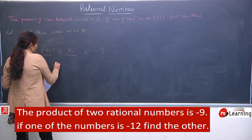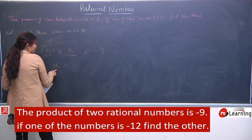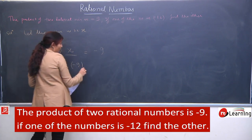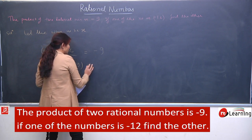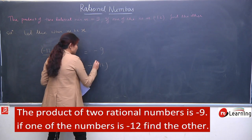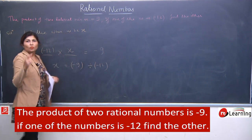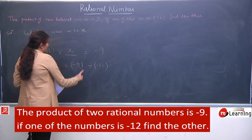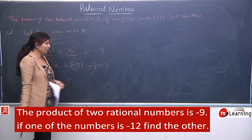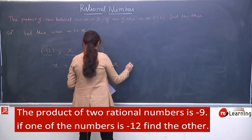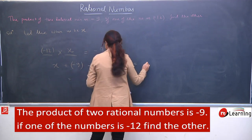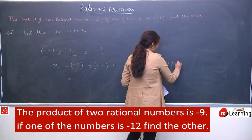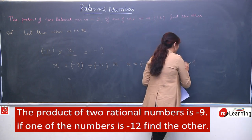Ab hum solve karenge. Jo nikalna hai, use hum left hand side pe rakhte hain. So we will keep x at the left hand side, and will shift minus 12 to the right hand side. This is in product, toh yahan division mein jayega. As I told you, jo operation yahan hai uska opposite ho jata hai — yahan multiplication mein hai, toh right hand side pe jake division mein ho jayega. Aur aap isko likh sakte hain: multiplicative inverse of minus 12. Toh yahan par do tariqe honge.